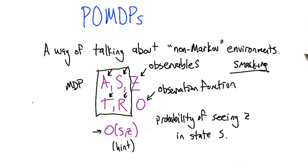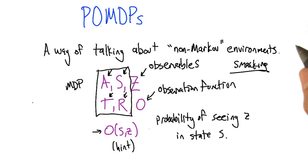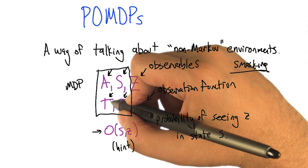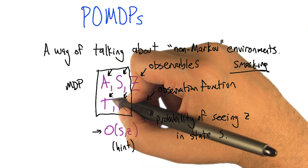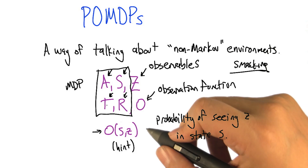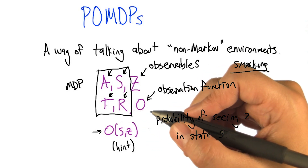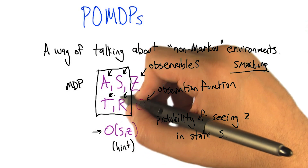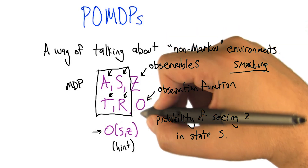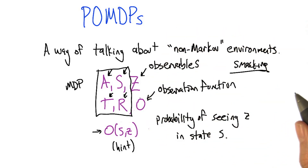So a POMDP basically has an MDP inside of it, and you can't see all of it. In particular, the part you can't see is S, and maybe T. The T relates S and A — it says how, given that you're in a state and you take some action, what state do you go to next? But of course you don't really know what state you were in, and you may not know what state you ended up in, because again, you as the agent have to make decisions based on what you can see.